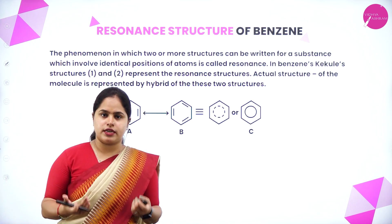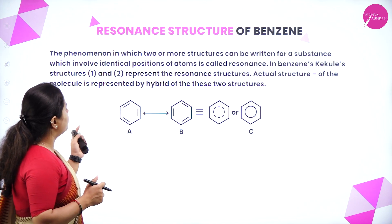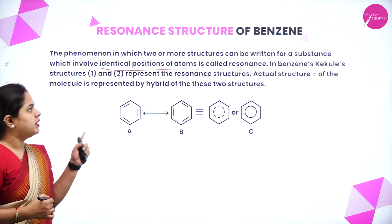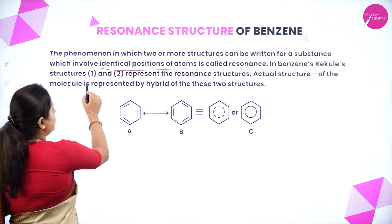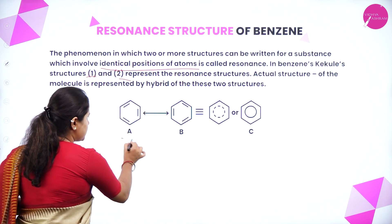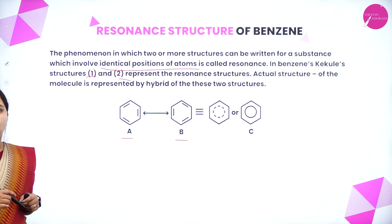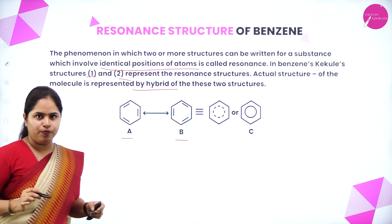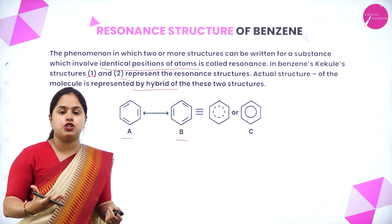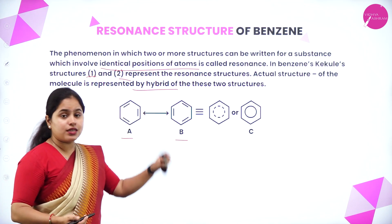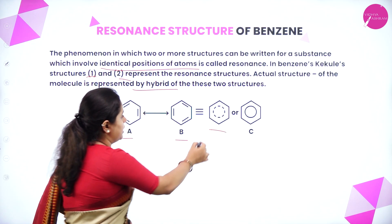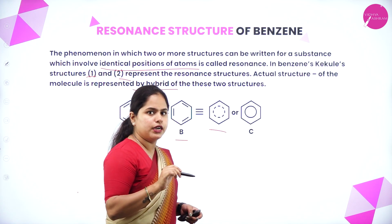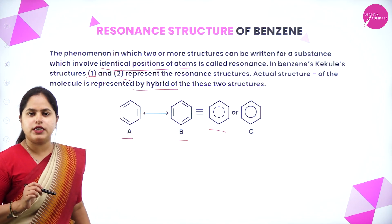The phenomenon in which two or more structures can be written for a substance, involving identical positions of atoms, is called resonance. In benzene, the two Kekulé structures represent the resonance structures — these are called canonical forms. The actual structure of the molecule is represented by the hybrid of these two. The resonance hybrid can be represented by a circle in the middle of the benzene ring.